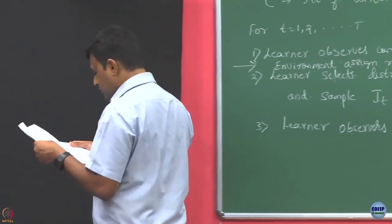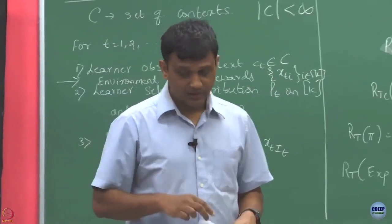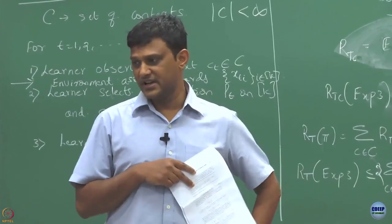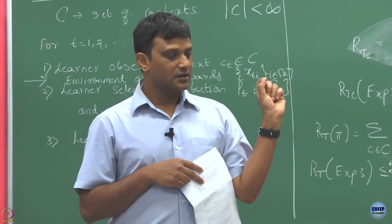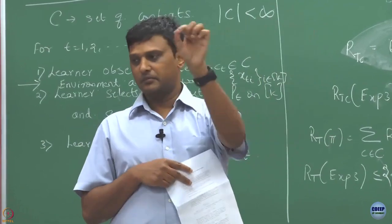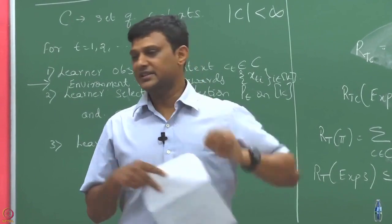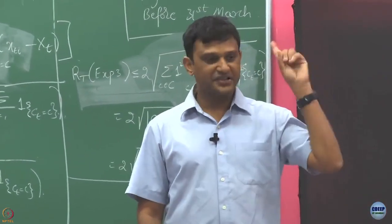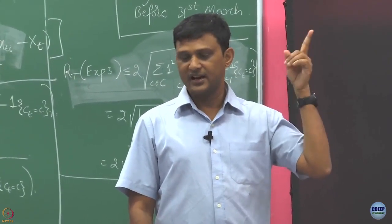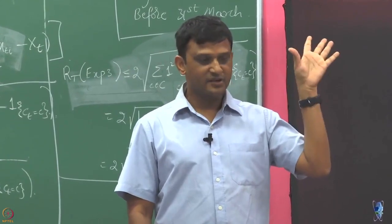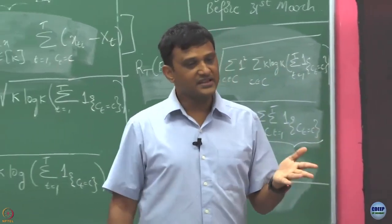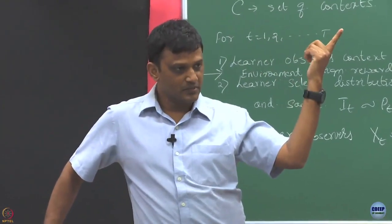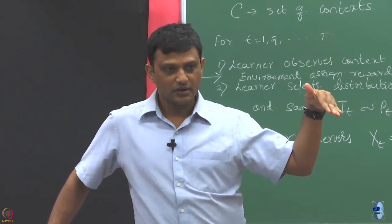One possibility is: what the learner is doing in all the setup is, given a context, he is trying to identify which is the best arm for it. In the standard bandit setup where we ignore contextual information totally, we always try to look for a single best arm — that was our benchmark, and against that we compared our algorithm. But now the best arm is context-dependent, as we discussed last time.